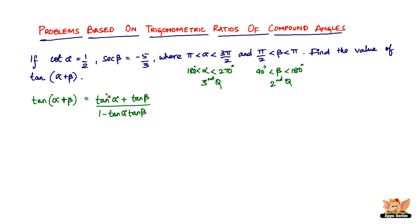So we have tan α, which is 2, because tan α is nothing but 1/cot α. So tan α is going to be equal to 2. We have tan α, we need tan β. Now β lies in the second quadrant.